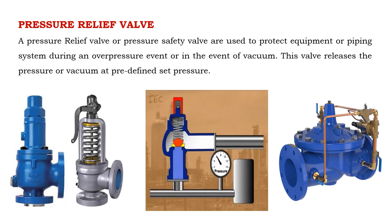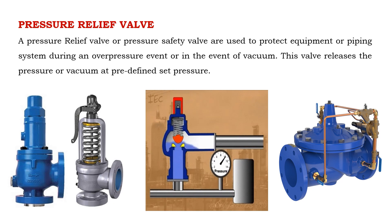A pressure relief valve or pressure safety valve is used to protect equipment or piping systems during an overpressure event or in the event of vacuum. This valve releases the pressure or vacuum at a predefined set pressure.